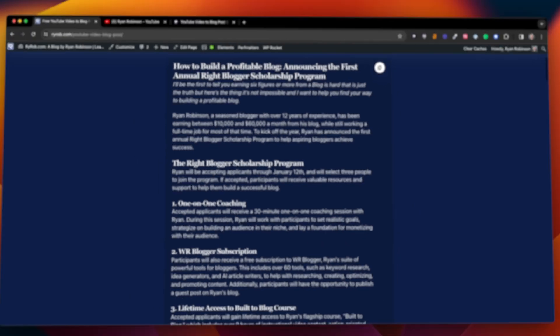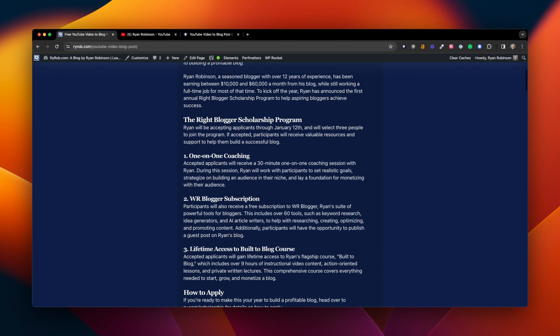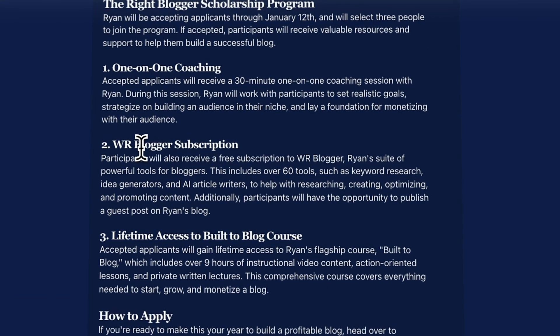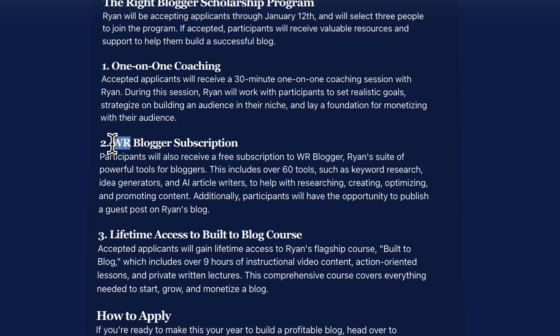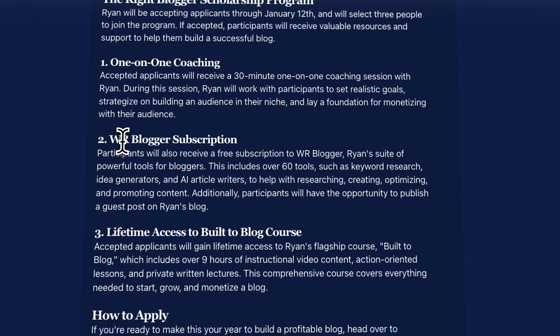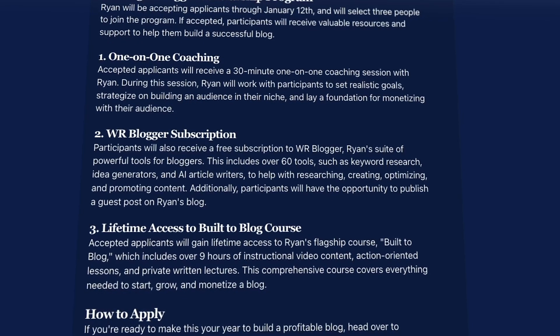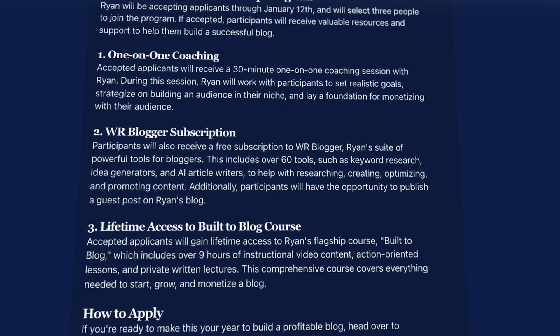You can see this looks awesome. However, like all AI content, you'll want to take into account proofreading — make sure there are no spelling mistakes or that the AI missed something. For example, you see this 'WR' right here — what we're actually talking about is the Write Blogger subscription, so that's something we'd want to correct during the editing process.